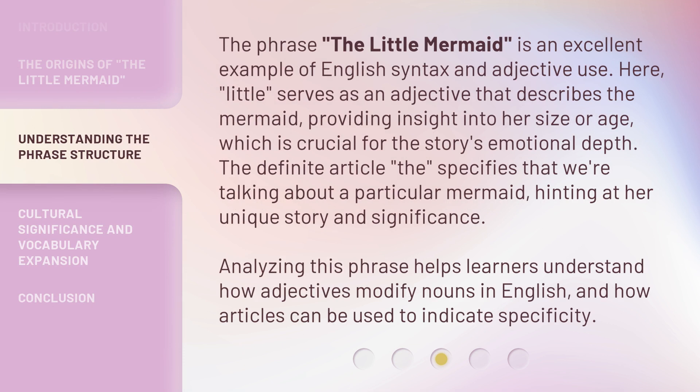The phrase 'the Little Mermaid' is an excellent example of English syntax and adjective use. Here, 'little' serves as an adjective that describes the mermaid, providing insight into her size or age, which is crucial for the story's emotional depth. The definite article 'the' specifies that we're talking about a particular mermaid, hinting at her unique story and significance. Analyzing this phrase helps learners understand how adjectives modify nouns in English, and how articles can be used to indicate specificity.